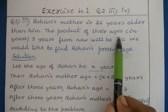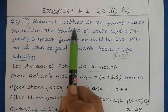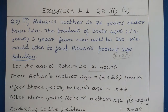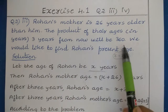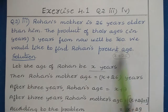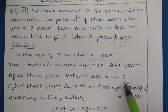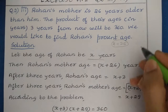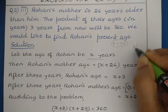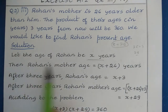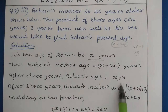The product of their ages after 3 years is equal to 360. We need to find Rohan's age after 3 years. Since Rohan's current age is x, after 3 years his age will be x + 3. For example, a person aged 25 will be 28 after 3 years — same logic applies here.